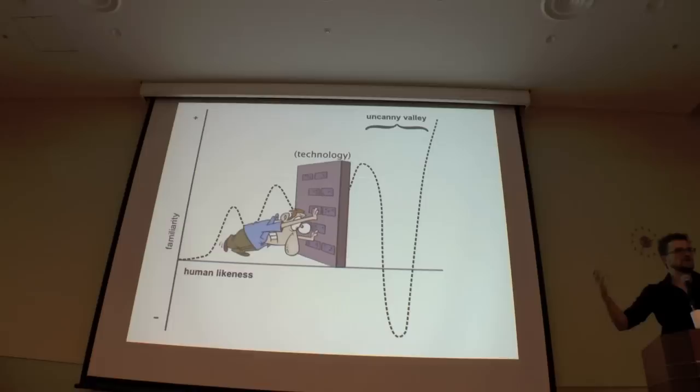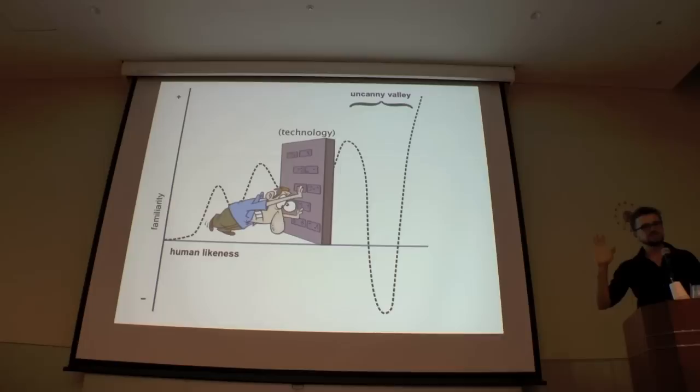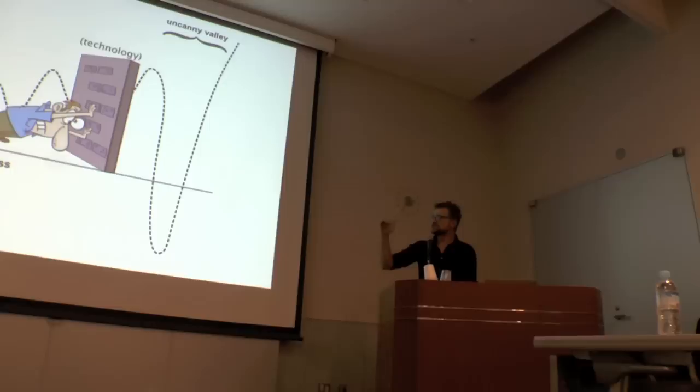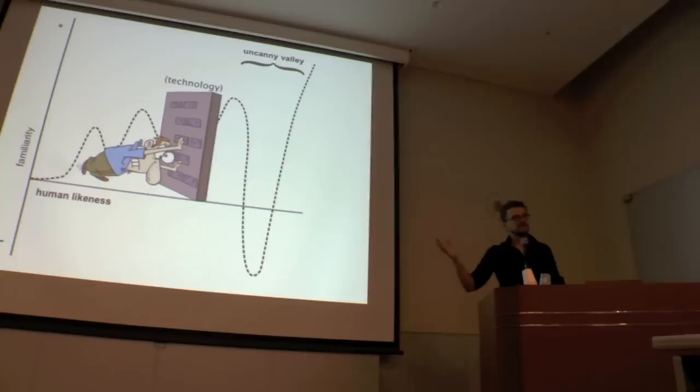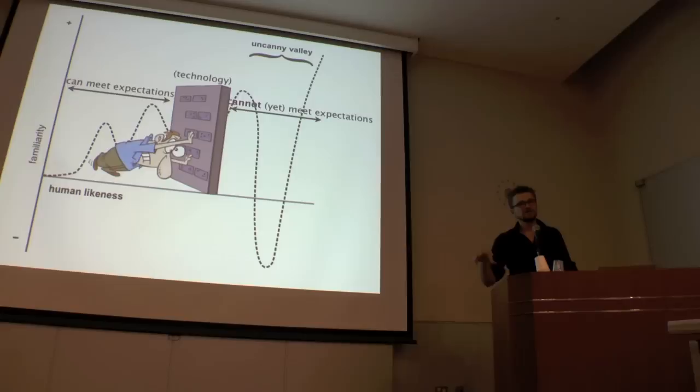And the other problem is that there's this wall we're all pushing against as researchers and technologists. Technology still creates a barrier to what we're able to achieve. And the issue, as we make things that look more and more like humans, is that expectations are increased. If we see something that looks like a human, we expect it to be able to act like a human. And this wall is preventing us from meeting those expectations.